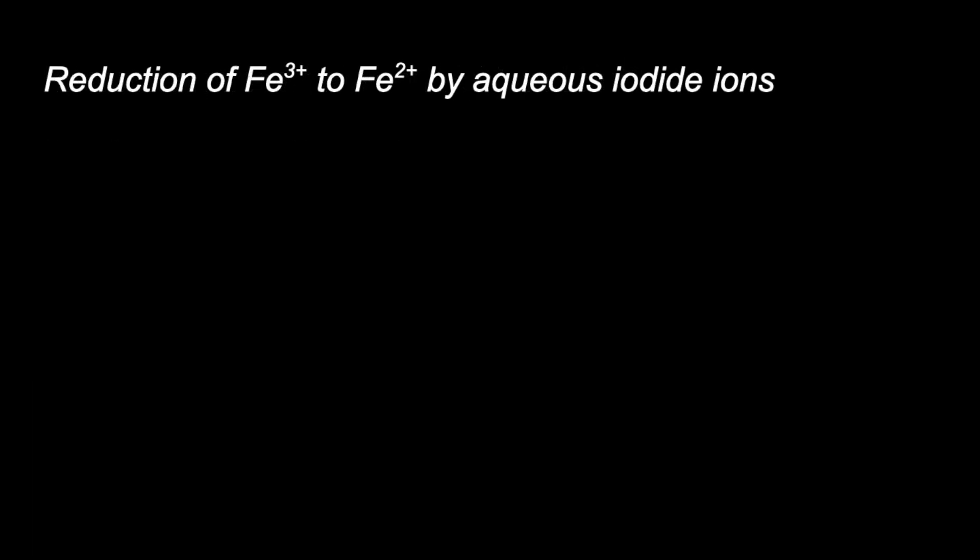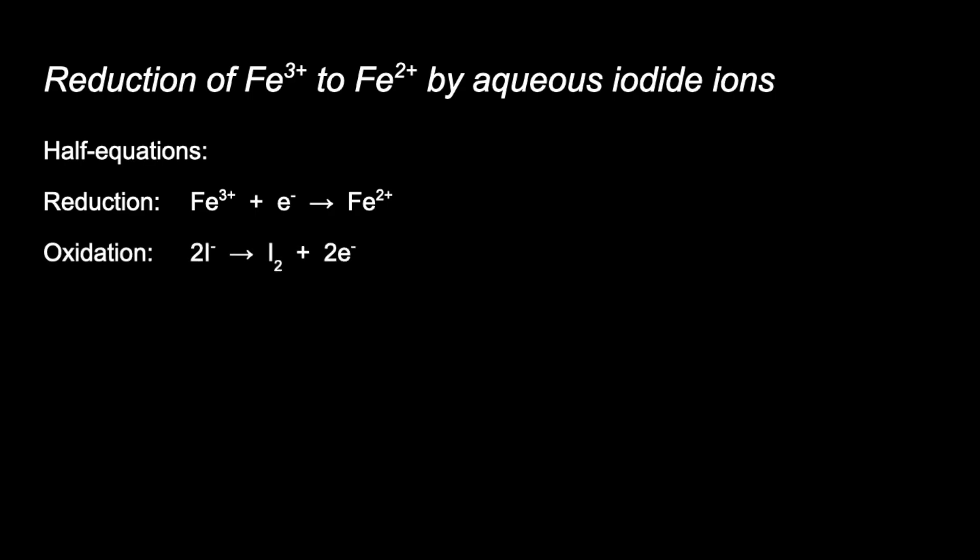The other interconversion involving Fe²⁺ and Fe³⁺ is the reduction of Fe³⁺ to Fe²⁺ by aqueous iodide ions, and the supplied information this time is the half equations. When combining half equations you need the electrons to disappear from the overall equation. We have one electron in the reduction half equation but two in the oxidation half equation, so we multiply the reduction half equation by two. That gives two electrons in each, and when added together the electrons cancel, giving the overall equation.